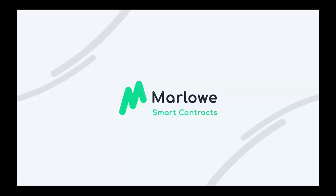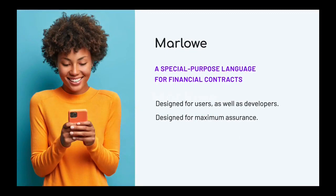I'm Simon Thompson from the Marlowe team, and we're here to give you an introduction to Marlowe. Marlowe is a special purpose language for writing financial contracts on Cardano. Why do we build special purpose languages, or domain specific languages? One reason is that we want to build languages that are closer to the language of the user and not so much the language of the system — designed to be in the specific domain of the application. So a financial language will talk about payment, for example.